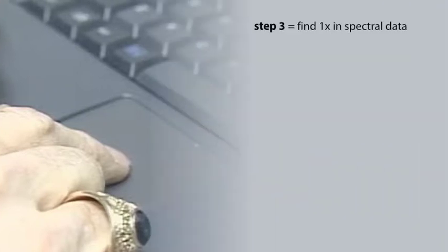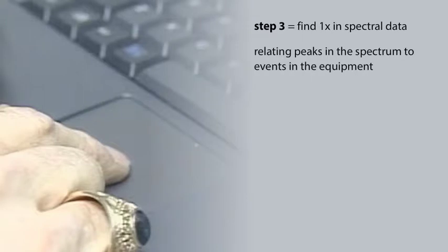Step three is to find the one times in the spectral data. With this step, you're past the preliminaries. You're relating peaks in the spectrum to events taking place in the equipment. That's what it means to analyze vibration. There are a couple of software tools that will prove handy.